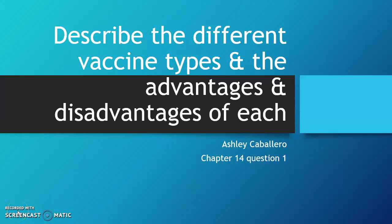My name is Ashley Caballero and I did homework 4 on chapter 14, question 1: Describe the different vaccine types and the advantages and disadvantages of each.